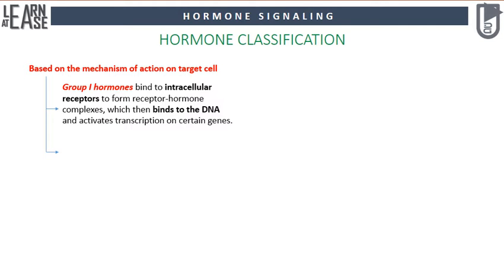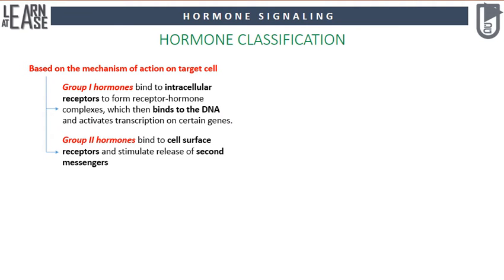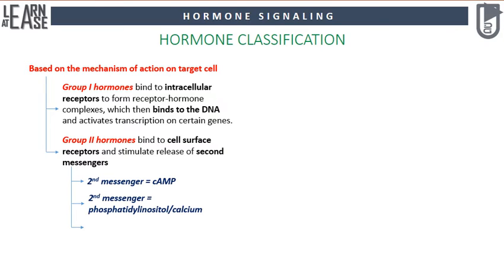Group 2 hormones bind to cell surface receptors and stimulate release of second messengers. Group 2 hormones are further differentiated into three groups based on the type of second messenger released in target cells. The first group triggers release of cyclic AMP as the second messenger.